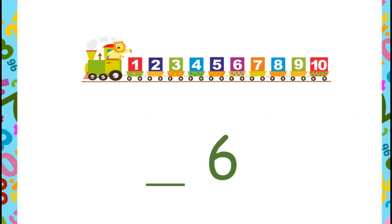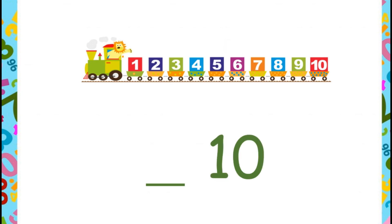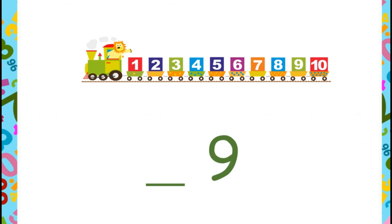What is the before number of 6? Before number of 6 is 5, as 5 comes first. What is the before number of 10? Well done — 9 is the before number of 10, as 9 comes first. Now let's see the before number of 9. Yes, as 8 comes first, the before number of 9 is 8.